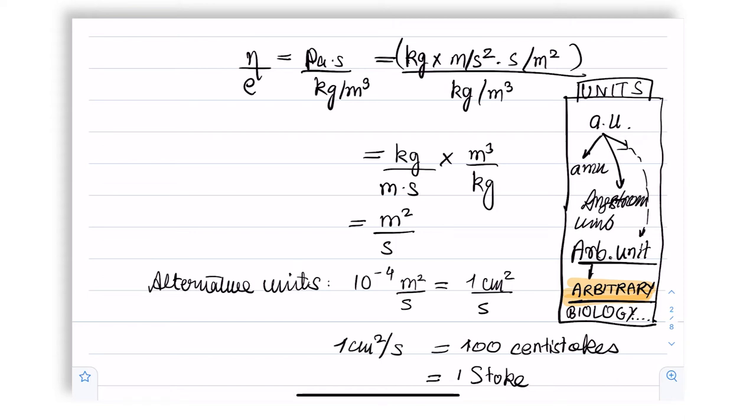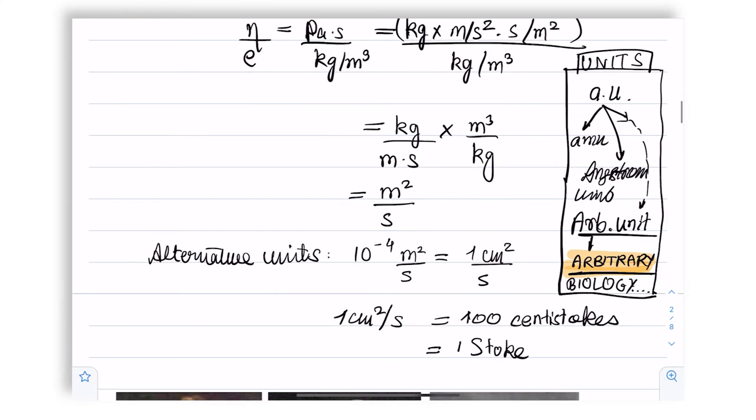This is due to centimeter to meter conversion and the power of 2. One centimeter squared per second is also a hundred centistokes, and a hundred centistokes is one stokes, also written by st. Just like we saw poise and centipoise earlier, so we now have stokes and centistokes.